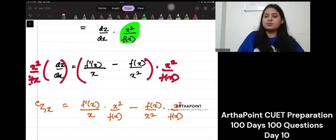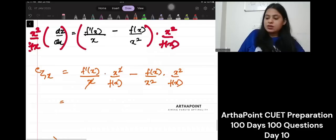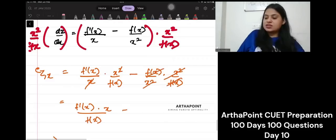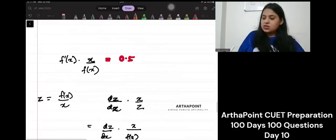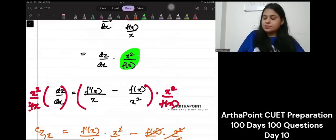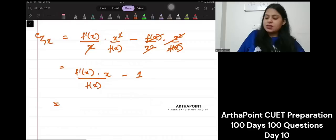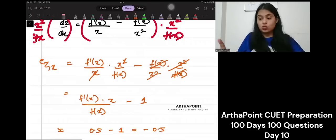This will be f dash x by x into x square by fx minus fx by x square into x square by fx. x will get cancelled. x will get cancelled. This will be f dash x into x by fx minus 1. And if you notice, this is 0.5. So, this is going to be 0.5 minus 1. So it will be minus 0.5. The answer is no.